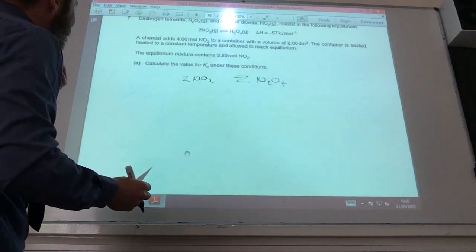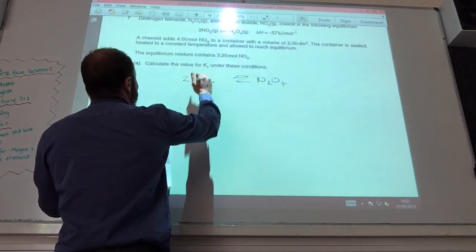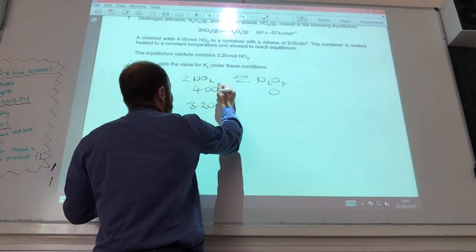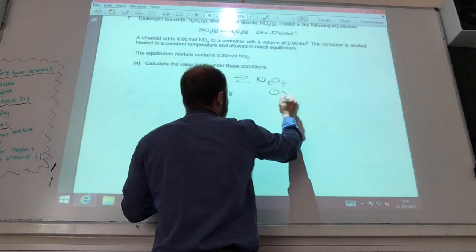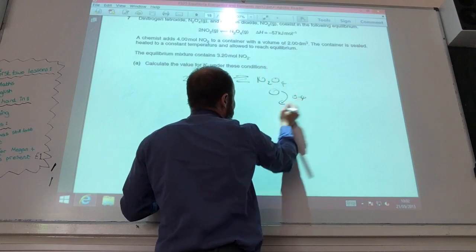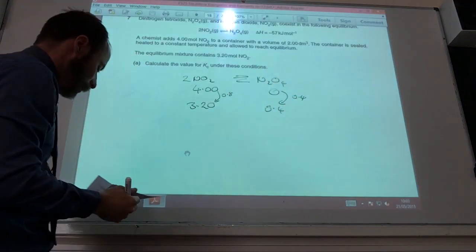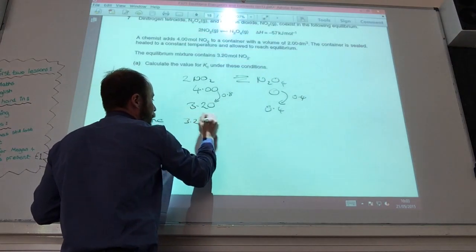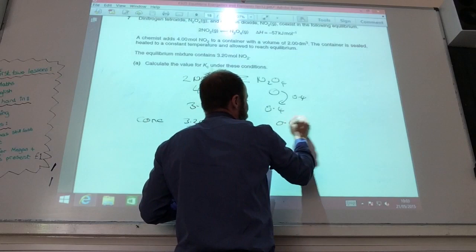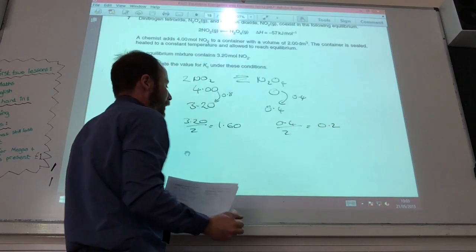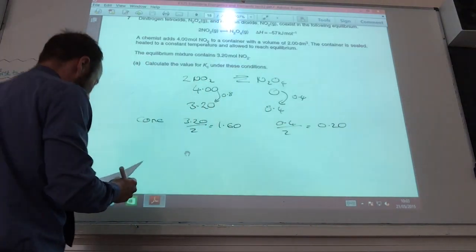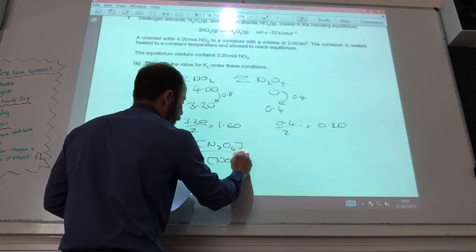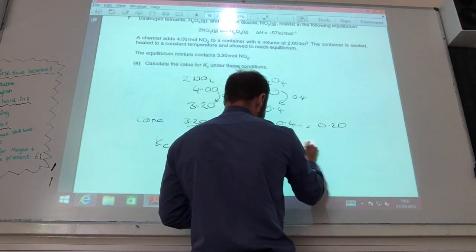Then it's our favorite calculating Kc. So initially I've got four moles of that and nothing of that. And at equilibrium I've got 3.20 moles of that, so that has gone down by 0.8 moles. For every two of those, I only get one of those, so that must have gone up. So I've now got 0.4 moles of that. Now, concentration, the volume is 2 decimeters cubed. So 3.20 divided by 2 is 1.60. 0.4 divided by 2 is 0.20.